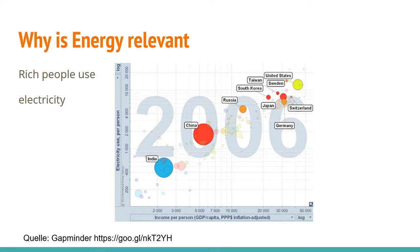Why should we talk about energy and why is it so relevant? Here is an interesting plot from Gapminder. Gapminder was founded by Rosling, a Swedish scientist and doctor, who thought: why are some people rich, why are some poor, and what are the relations? He went through all the data from the United Nations and collected and prepared them with his team. Today we have access to all this information via that website.